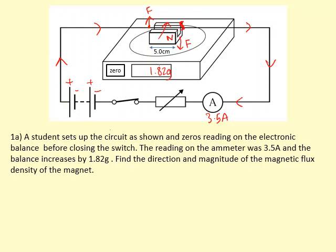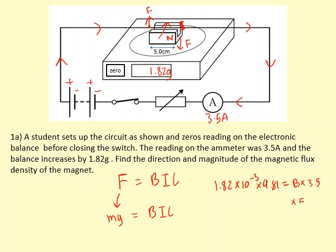Now to find the magnitude of the magnetic flux density, we can use the equation F equals BIL. Because what we have is a mass reading, we can use the mass reading to figure out the force that it's being pushed down with. We can use mg equals BIL. So mass is 1.82, I'm going to turn that into kilograms, times that by 9.81. That tells us the force on the balance, which is the same as the force on the wire. And then B, the magnetic flux density is what we're trying to find. The current is 3.5, and the length that's actually exposed to the magnetic flux density is 5 centimeters. So if you rearrange this to get the magnetic flux density, you get 0.10 teslas.